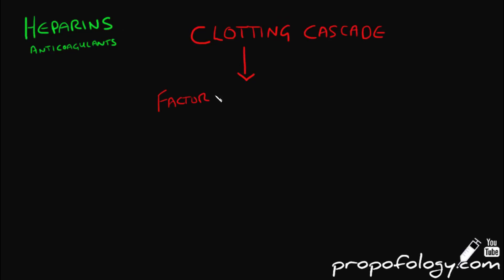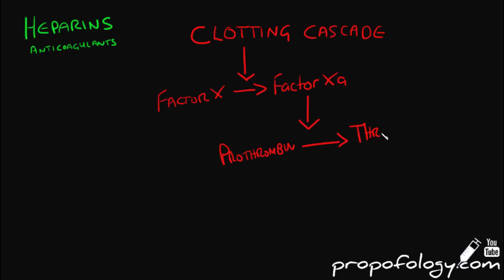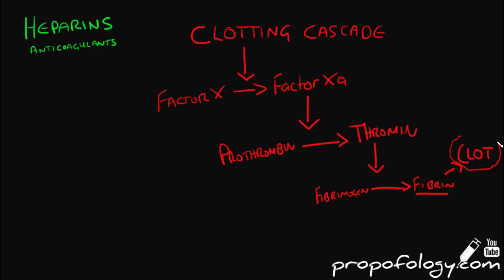The clotting cascade occurs in the body in response to an activating stimulus. Rather than exploring it fully, we'll focus on the final common pathway used by these anticoagulants. The clotting cascade converts factor 10 to 10a, which then catalyses the change of prothrombin to thrombin. Thrombin then catalyses the conversion of fibrinogen to fibrin, which causes a clot.